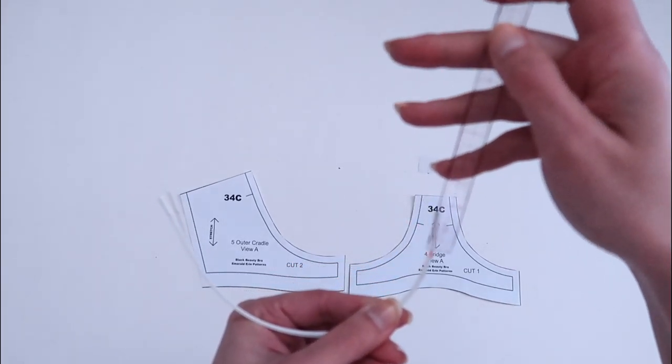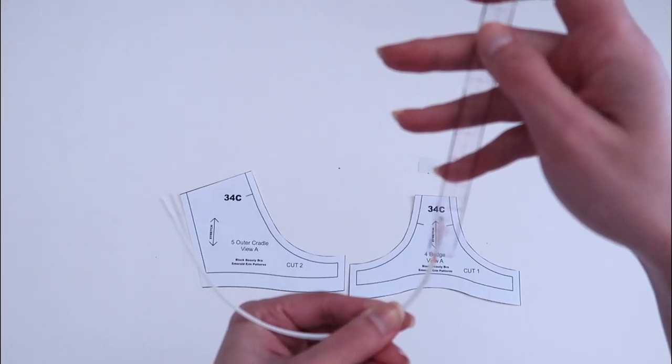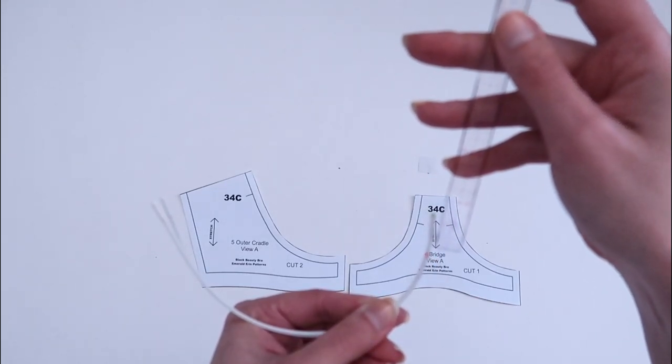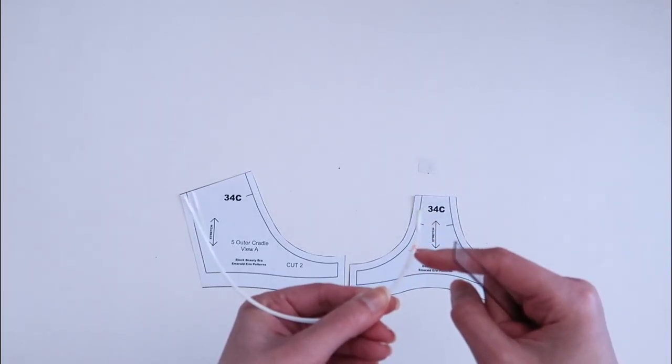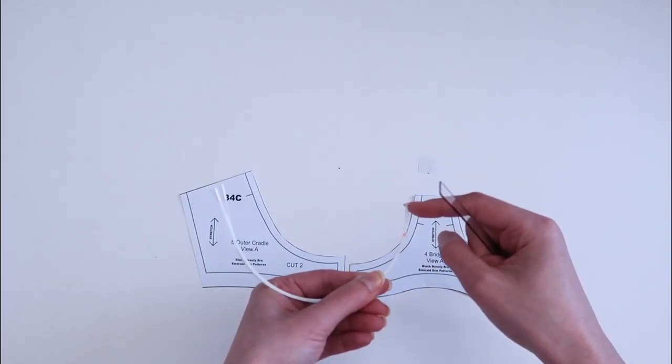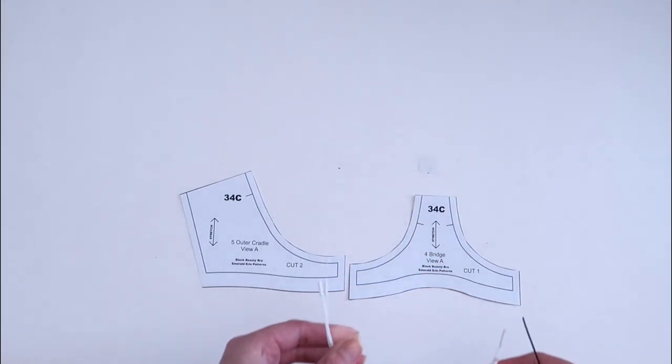So in this case I'm going to measure the difference between the two wires. So for this one it looks like three quarters of an inch difference. So my plunge wire is three quarters of an inch shorter than the wire that the bra is intended to use.